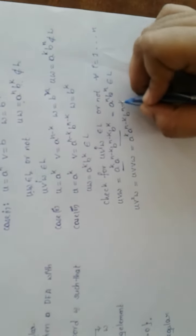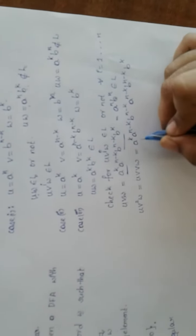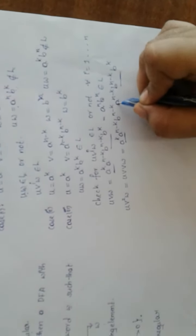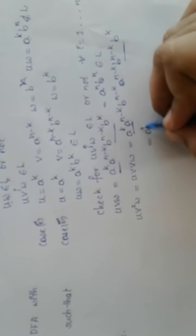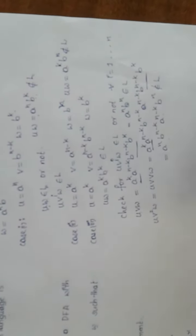Now let me check U V^2 W. This can be written as U V V W, expanded as A^K, A^(N-K) B^(N-K), A^(N-K) B^(N-K), B^K. Clubbing terms with common bases that are adjacent gives A^N, B^(N-K), A^(N-K), B^N. We cannot club this A with B^(N-K) across the boundary. This format does not belong to our language.